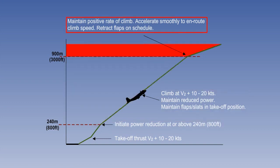Above 3,000 feet, the aircraft continues the climb and accelerates to en-route climb speed, retracting flaps and slats at the appropriate speeds.